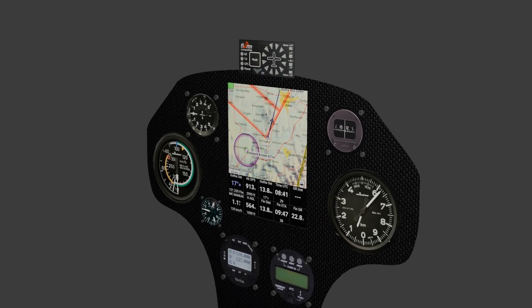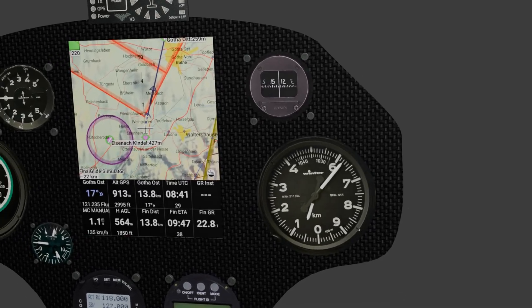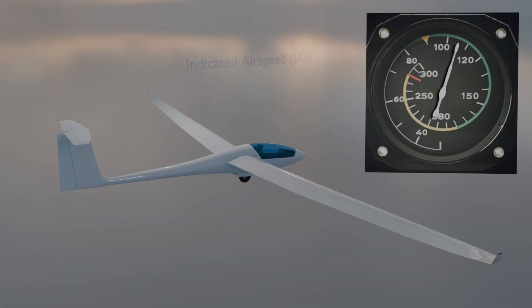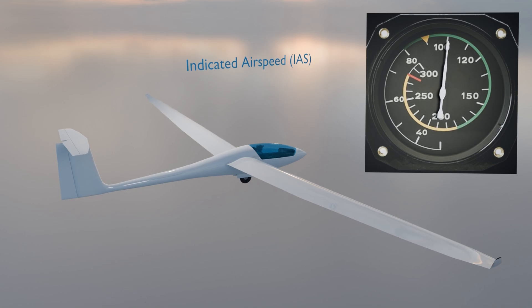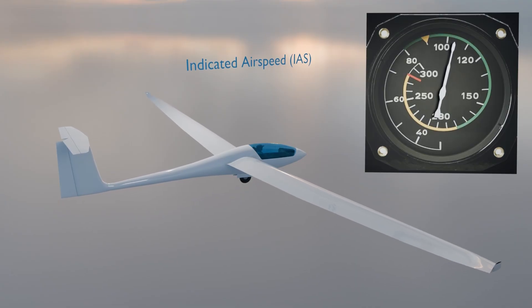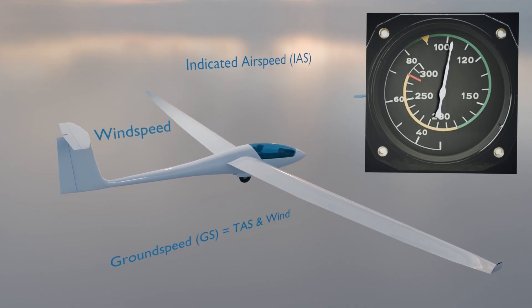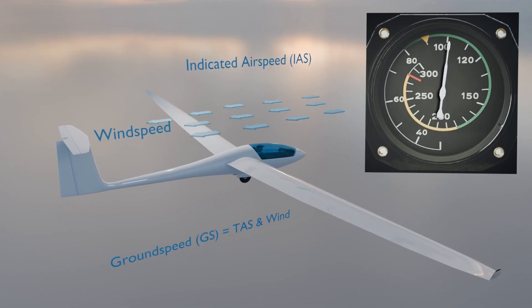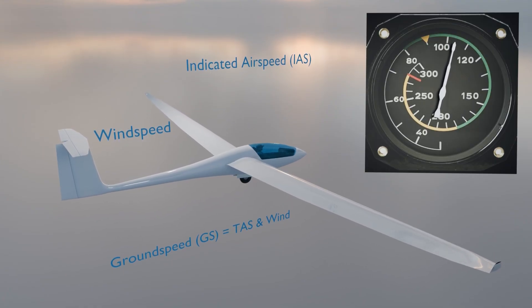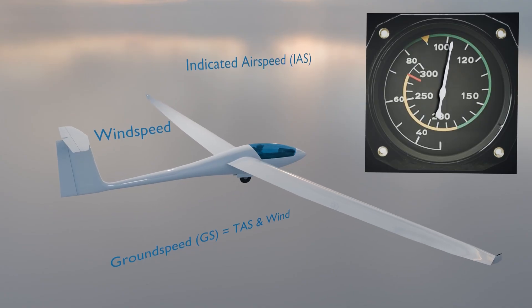So where do we start? Right — with the airspeed indicator. The airspeed indicator shows the speed of our aircraft relative to the surrounding air, in kilometers per hour or knots — not the speed over the ground. That's a good thing, because the dynamic airflow around the wings depends only on that airspeed. Ground speed can be totally different depending on whether you've got a headwind or a tailwind.